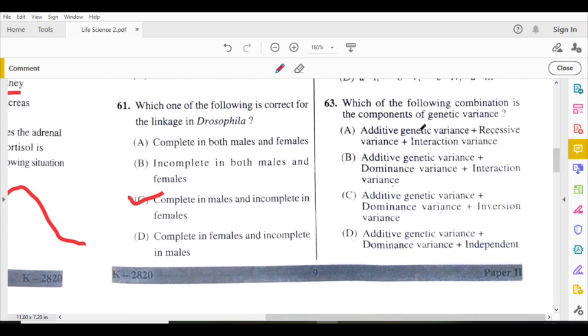Which of the following combination is the components of genetic variance? Additive genetic variance plus dominance variance plus interaction variance. B is the answer.